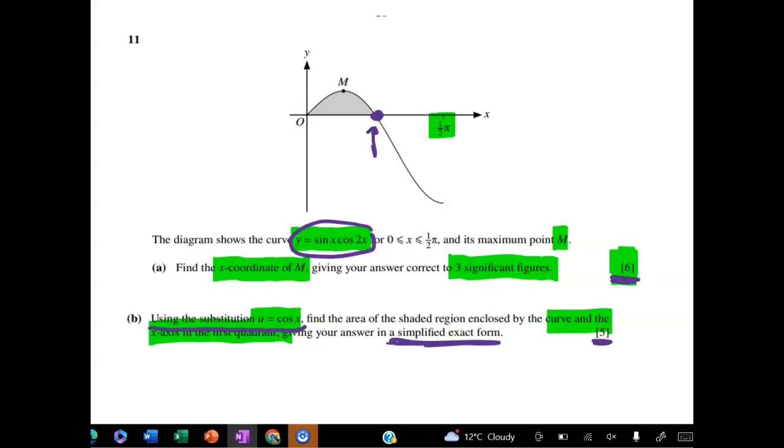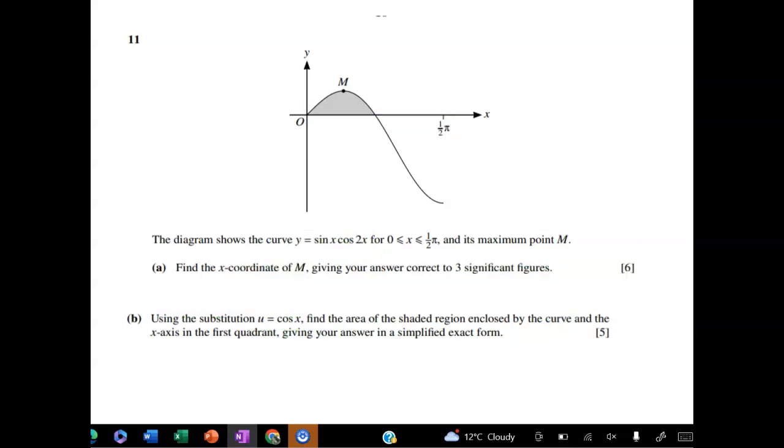Now, it says to use the substitution u equals cos of x. When I got to the question, I was much happier just getting on with it and doing the integration using the reverse chain rule. I think those of you who are going really well with your work so far probably are going to have the same reaction. But because it says substitution, we've got to use substitution. So in the work solutions that I'm going to post to Google Classroom, I've done it both ways. Okay, so let's get on with the first part. We have to find the x-coordinate of M.